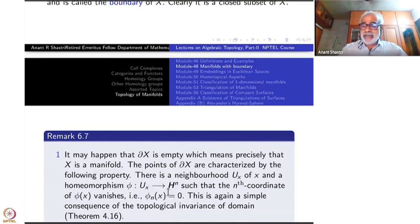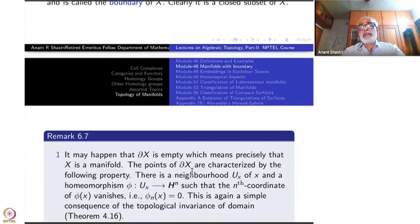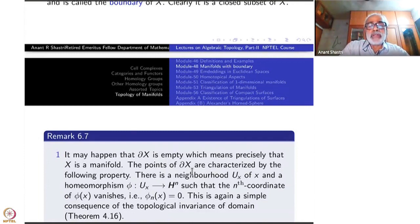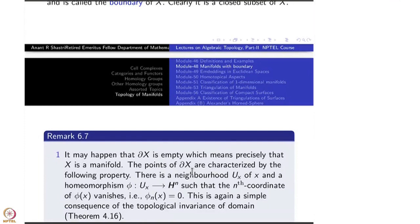So in the new definition, we have not thrown away the old definition — we have adopted it. This new definition is actually an extension of the old definition. The only possibility is that manifolds can have what are called boundary points. The points of the boundary of X are characterized by the following property: there is a neighborhood U_x of x and a homeomorphism phi from U_x such that the nth coordinate of phi(x) is zero.